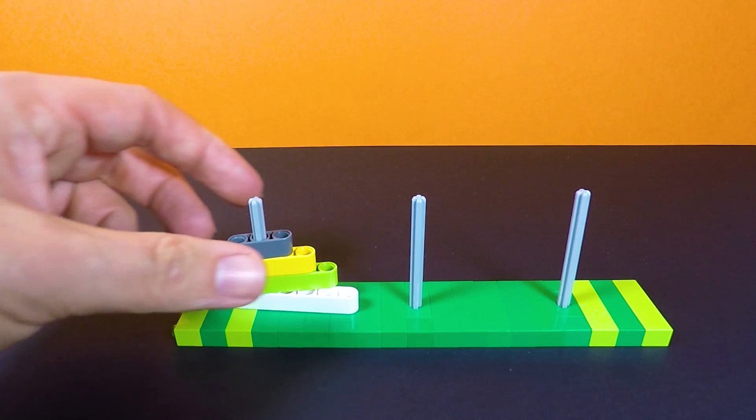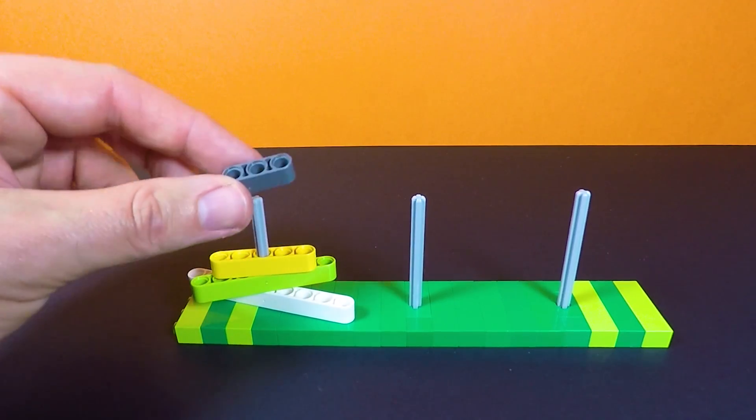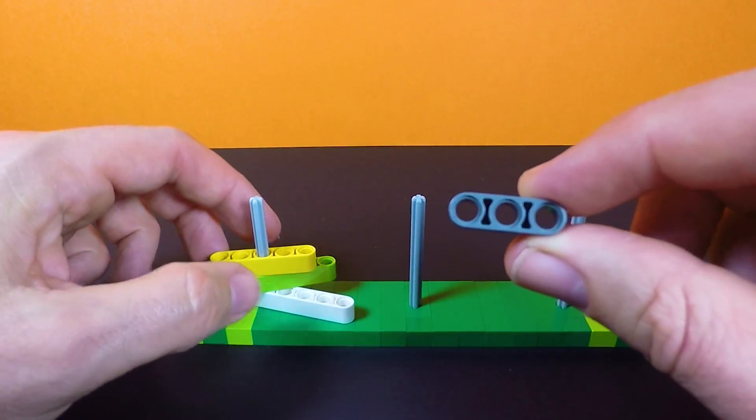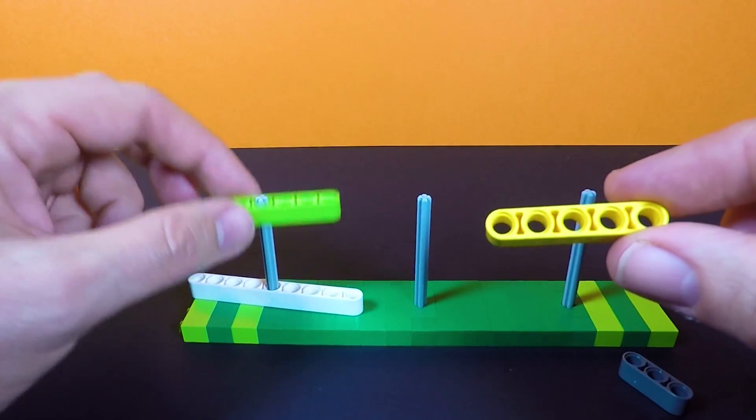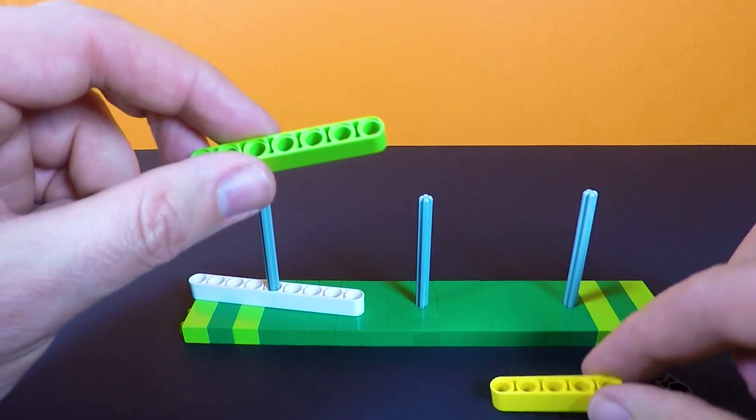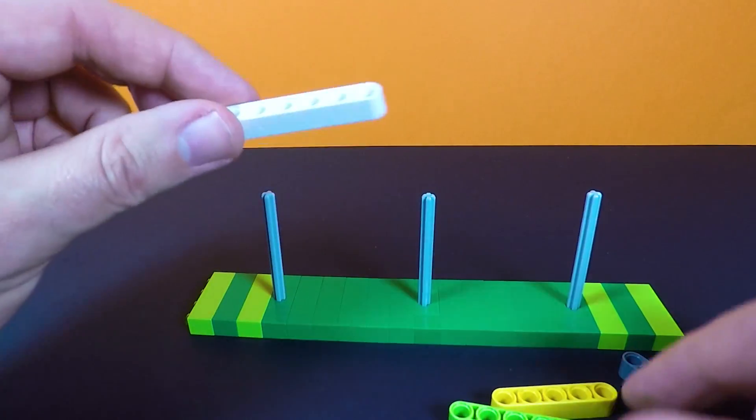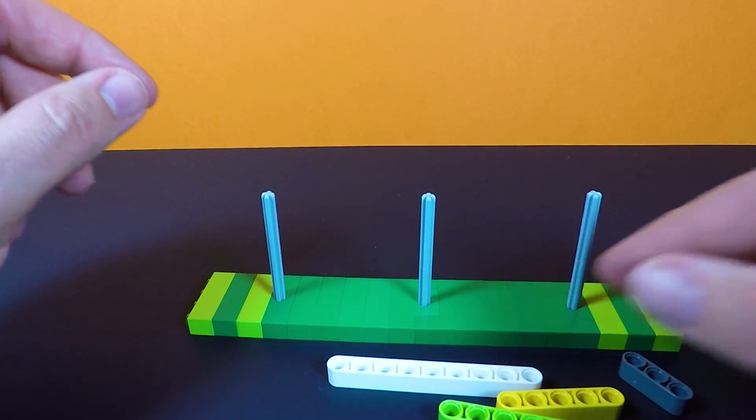Okay, so this is the four piece Tower of Hanoi game and we're just using these Technic beams. We need a 1x3 beam, a 1x5 beam, a 1x7 beam, and a 1x9 beam, and that's just for the four tower puzzle.